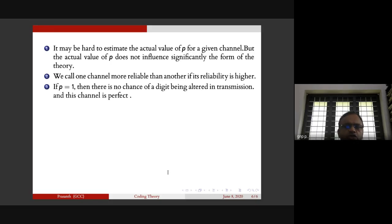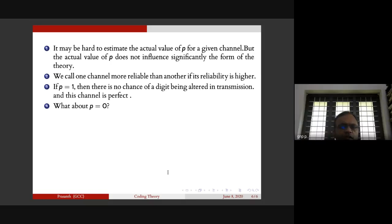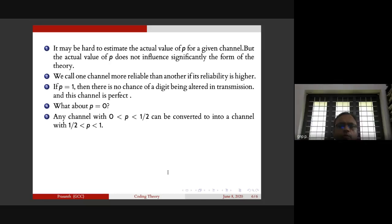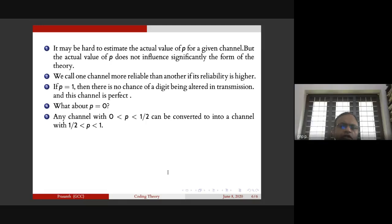If P equals 1, the channel is perfect - there is no chance of a digit being altered. If P equals 0, then zero becomes one and one becomes zero. Any channel with 0 < P < 1/2 can be converted into a channel with 1/2 < P < 1. Therefore, we always consider channels with P satisfying 1/2 < P ≤ 1.